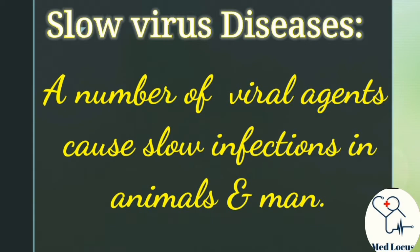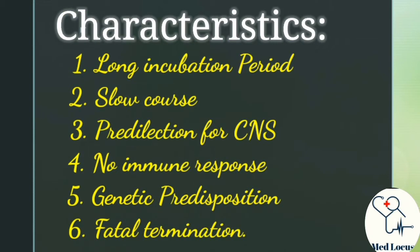Slow virus diseases are the slow infections of animals and man caused by a number of viral agents. These diseases are characterized by a very long incubation period ranging from months to years, course of illness lasting from months to years, predilection for involvement of the central nervous system, absence of immune response, genetic predisposition, and terminate fatally.